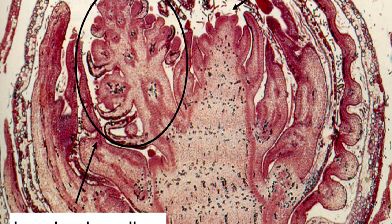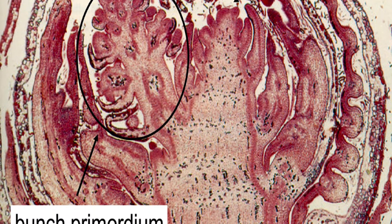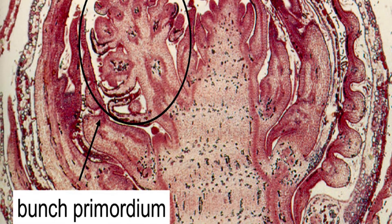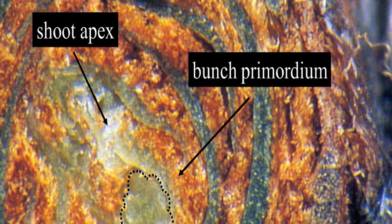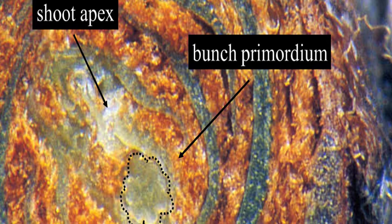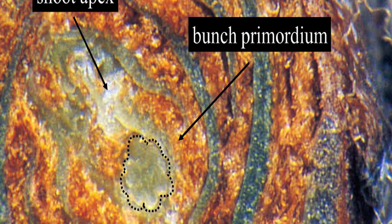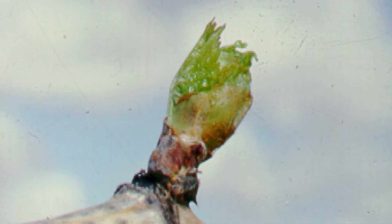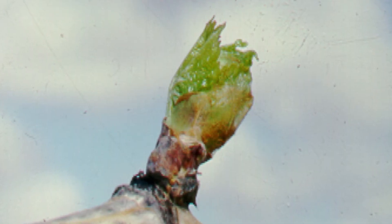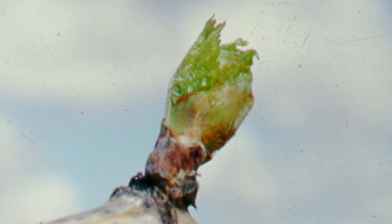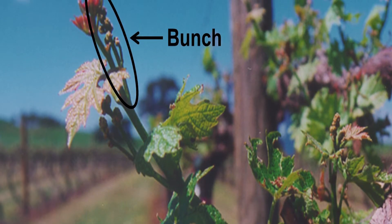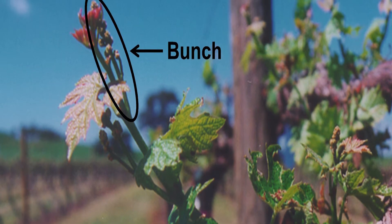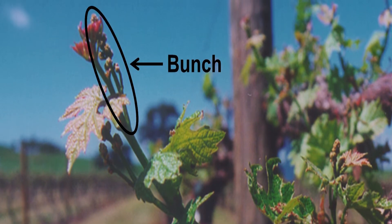The number of potential bunches per bud is commonly referred to as bud fruitfulness. During winter, dormant buds are covered by a protective layer of hairs and enclosed within a scale to protect them from harsh cold winter conditions. In the spring, bud burst occurs and as the bud grows, flowers are formed during a short period spanning bud burst. The number of flowers formed on an inflorescence determines the bunch size and the number of berries that a bunch may have.